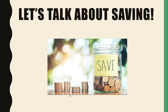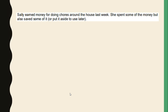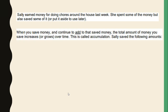Let's talk about saving. Sally earned money for doing chores around the house last week. She spent some of the money but also saved some of it, or put it aside to use later. When you save money and continue to add to that saved money, the total amount of money you save increases or grows over time. This is called accumulation.